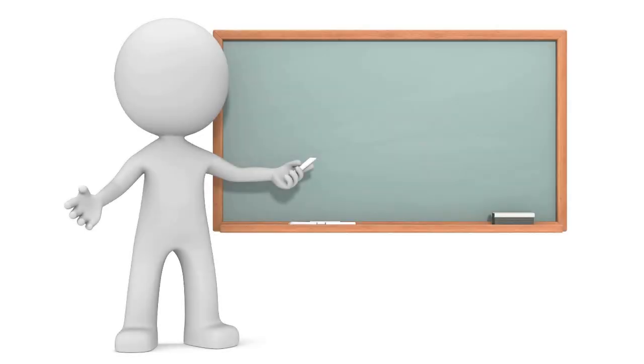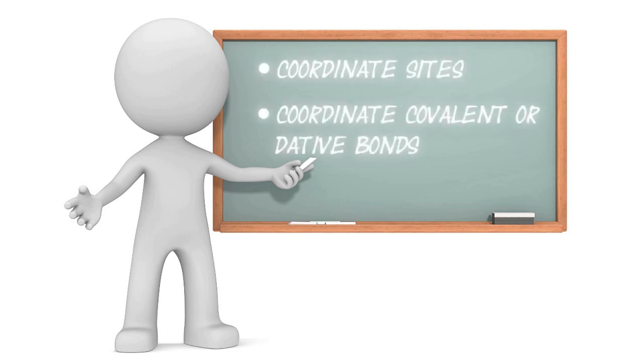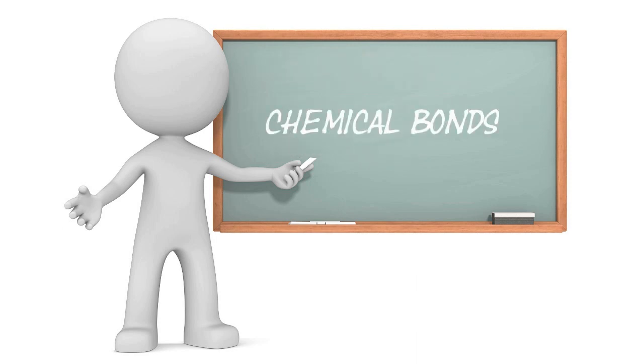The explanation requires the introduction of a few new terms that you may or may not be familiar with, including coordinate sites and coordinate covalent or dative bonding. Before we get into the details, let's start with a quick review of chemical bonds.